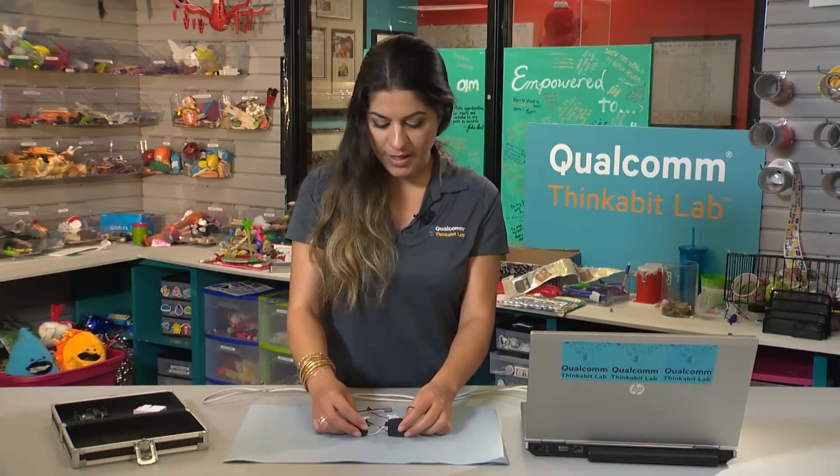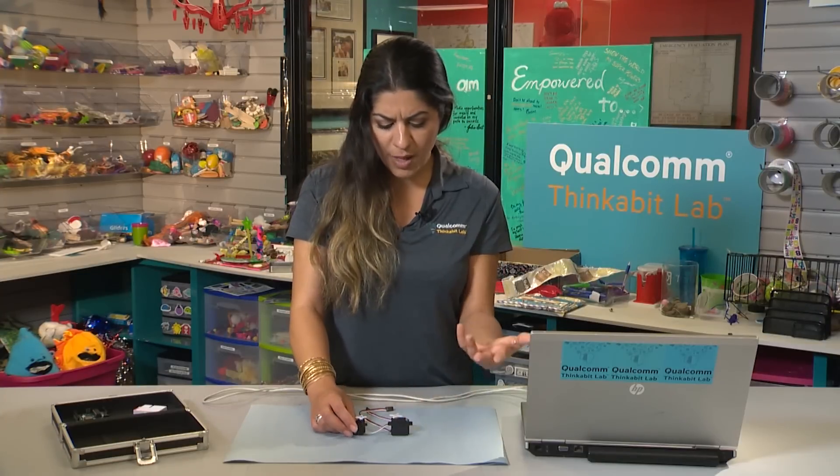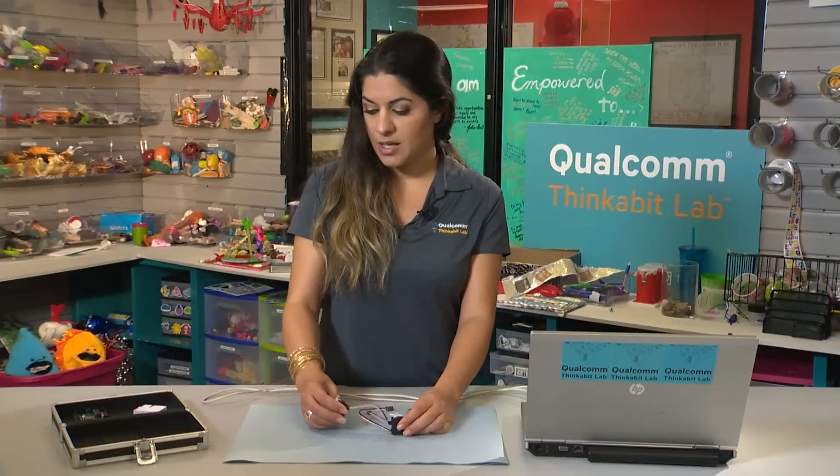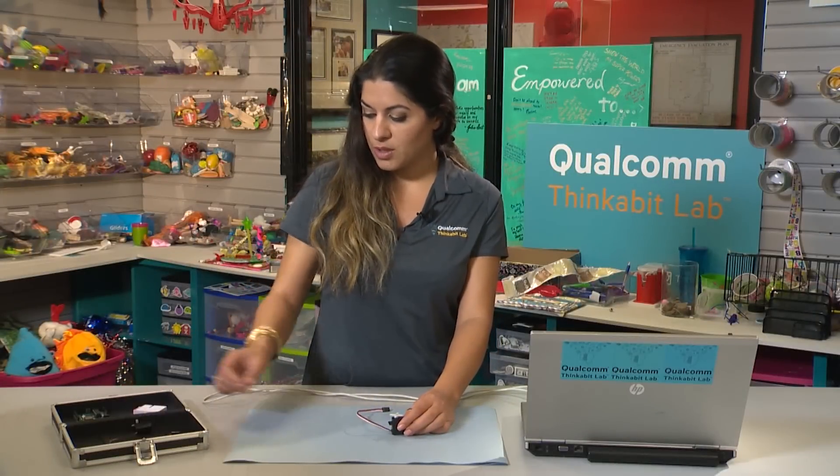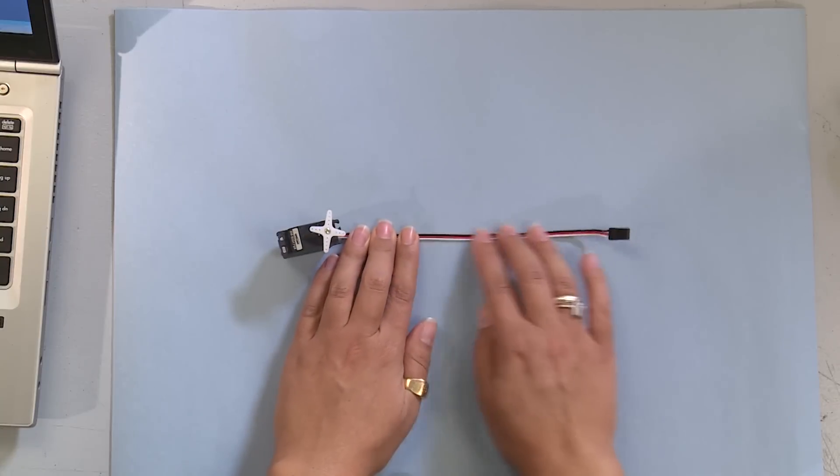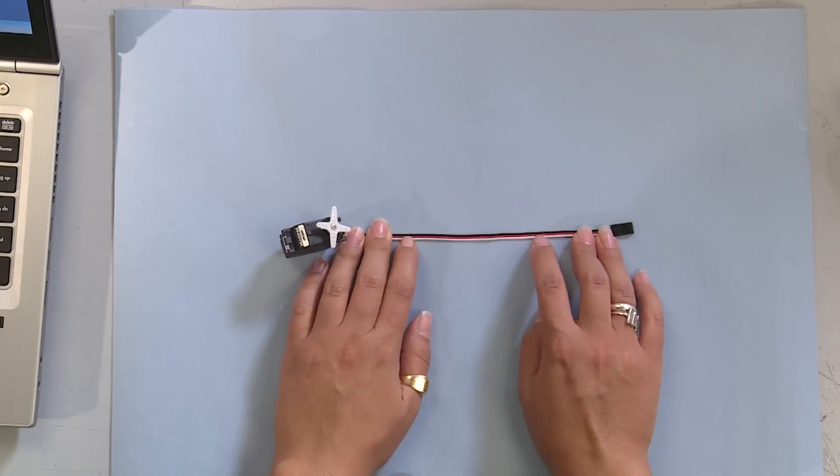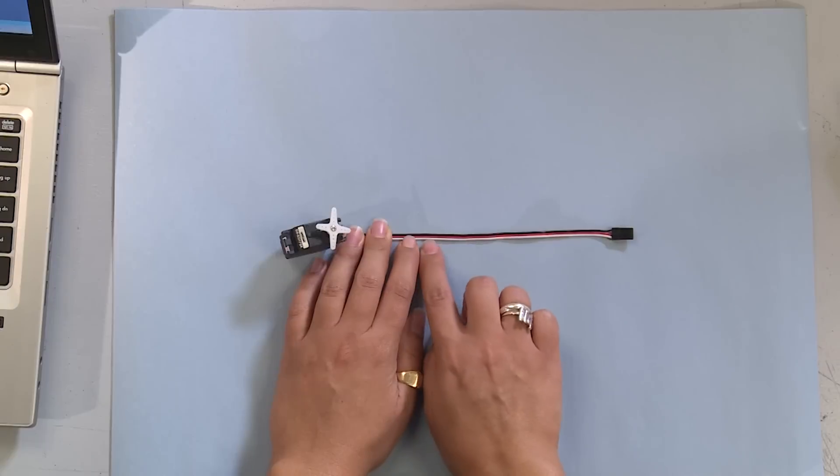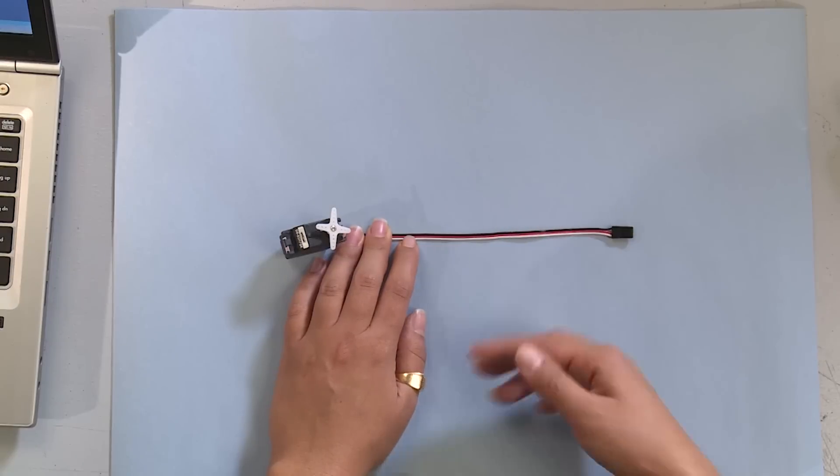We're going to program a very simple example for these servos, something that you can manipulate and control. The first thing I want you to notice is there are three wires coming out of your servo. The red and black power the motor, and the white is the signal that controls it.